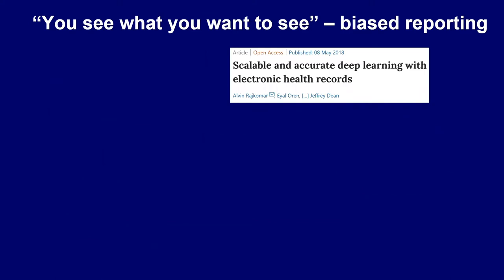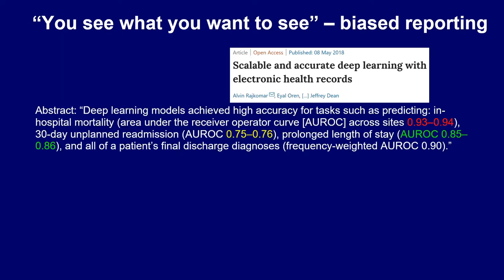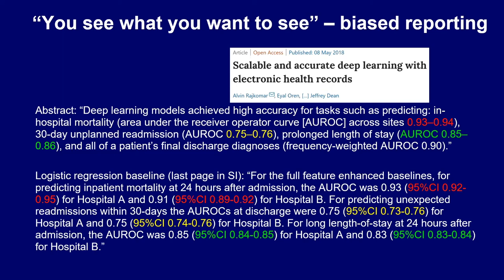There's quite a lot of biased reporting. A highly cited paper using deep learning on electronic health records claimed in its abstract that the deep learning model achieved high AUC for endpoints like readmission and mortality — values like 0.93 and 0.75. But the logistic regression baseline, buried in the supplementary material, shows basically the same numbers. The abstract claims deep learning outperformed everything else, but if you look at confidence intervals, it's only a marginal improvement. Always report results in a realistic way.